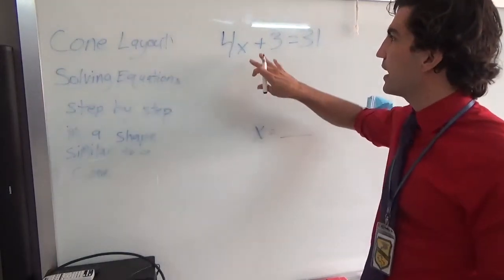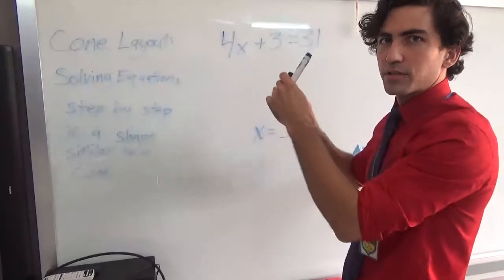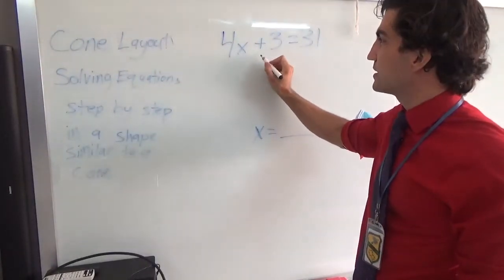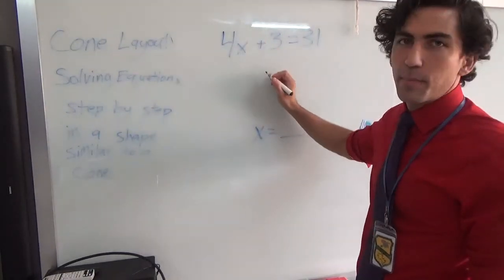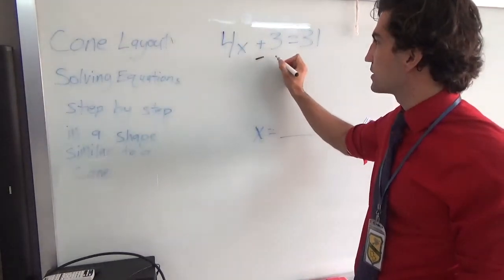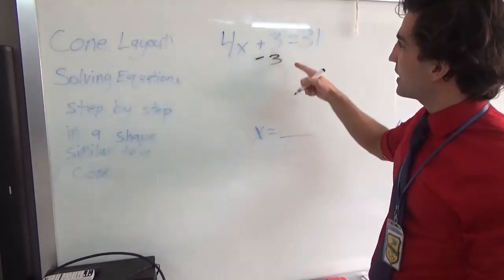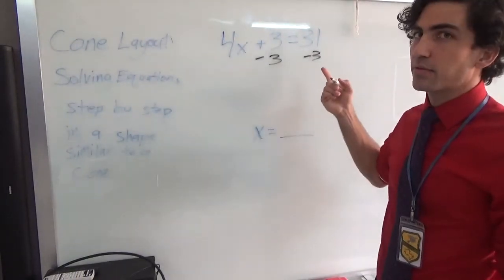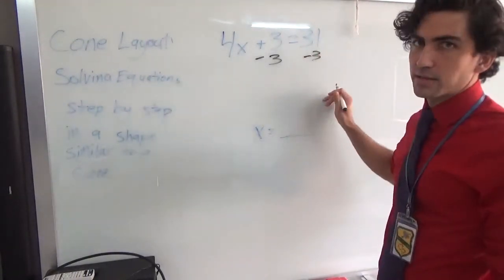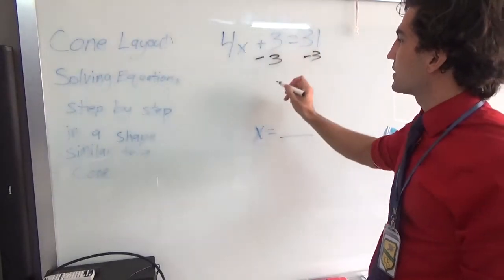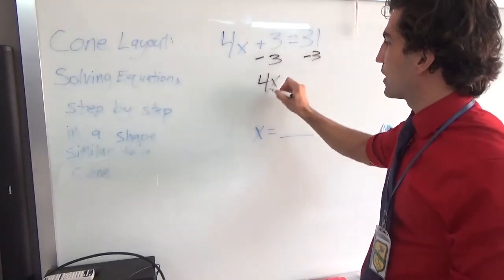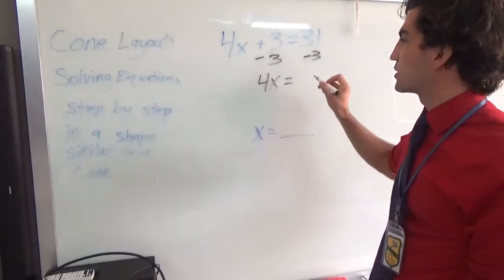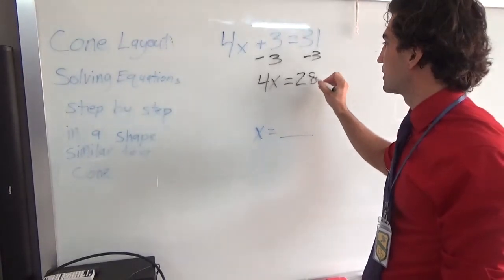If I want to get all of these things that are added on to it, if I want to break them off, I'm going to start by getting rid of this 3. And since it is adding, we're going to do the opposite of that. We're going to subtract 3. But anything we do to the left side of the equal sign, we have to do to the right side. So I have to do minus 3 to the right side. So this will cancel out. We will be left with just 4x. And on the right-hand side, we have 31 minus 3. That is 28.